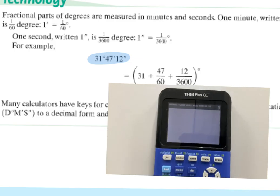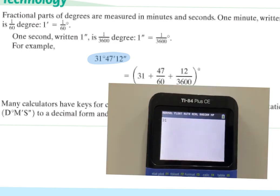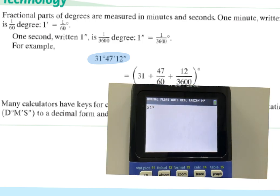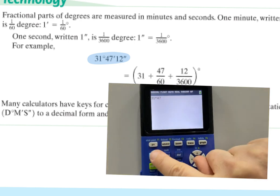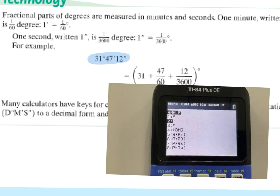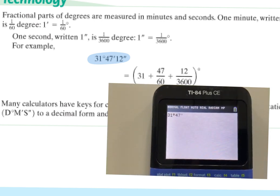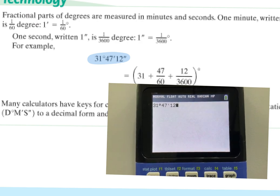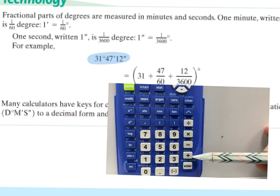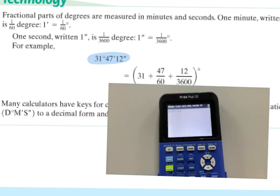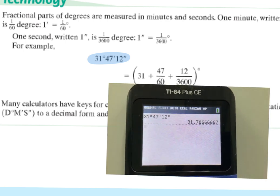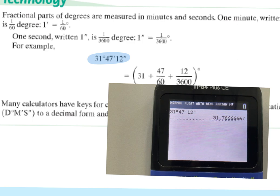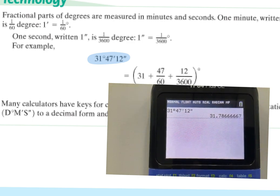To use the calculator for degree-minute-second notation: type 31, go to 2nd/apps for the degree symbol, type 47, go back to 2nd/apps for the single tick mark (minutes), type 12, then use alpha-plus for the double tick mark (seconds) — it's above the plus symbol. Hit enter and it converts to decimal degrees. The degree symbol and single tick mark are both under 2nd/apps, but the double tick mark is under alpha-plus.